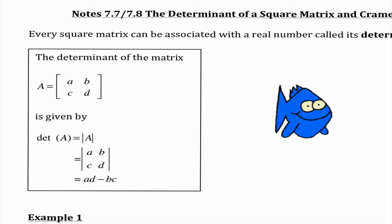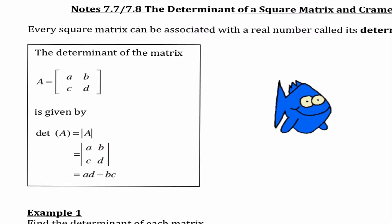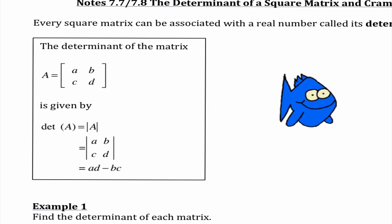So let's see what we do. The determinant of matrix A is given by — we use notation where instead of brackets we use straight lines — and we do A times D minus B times C. So if I'm drawing that out, A times D minus B times C. Mr. Determifish says subtract, baby. So we're multiplying across, then subtract, multiply across. Pretty straightforward.